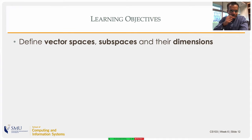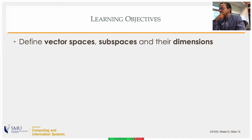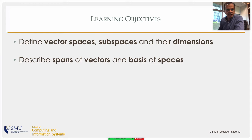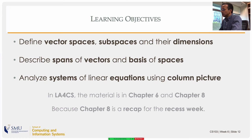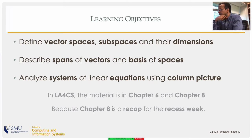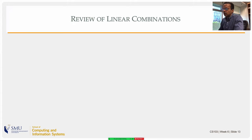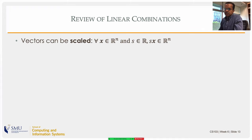Today we will start defining vector spaces, subspaces, and dimensions. As we went through our initial chapters there were teasers of things coming up, and whatever you see today will be almost a formalization of things you've already seen. Then we'll talk about spans of vectors, the basis of spaces, and linear equations using the column picture. Most of the material will be from chapter six, but chapter eight is more like a recap, so there will be material from chapter eight also.